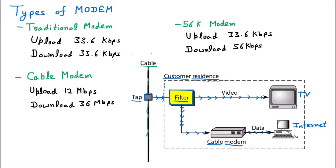The cable modem is popular for several reasons. First, the upload speed is 12 Mbps, which is much faster than the traditional modem or the 56k modem. Second, the download speed is 36 Mbps, also much faster. Third, because of the filter applied, we can both watch TV channels at home and get internet connectivity simultaneously.